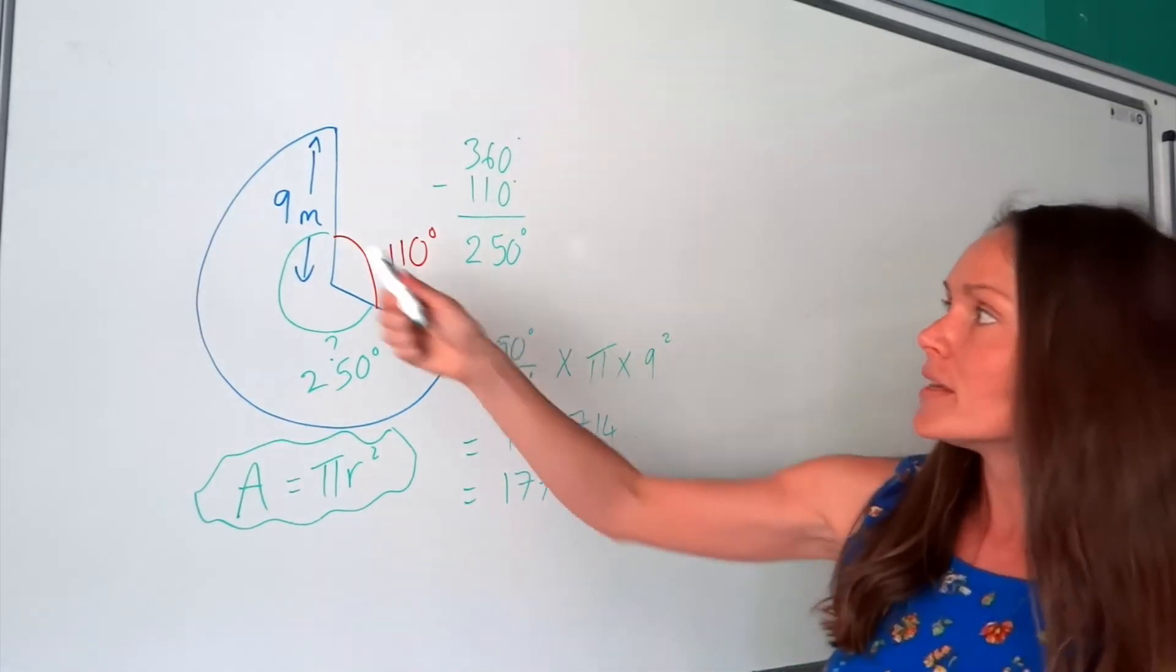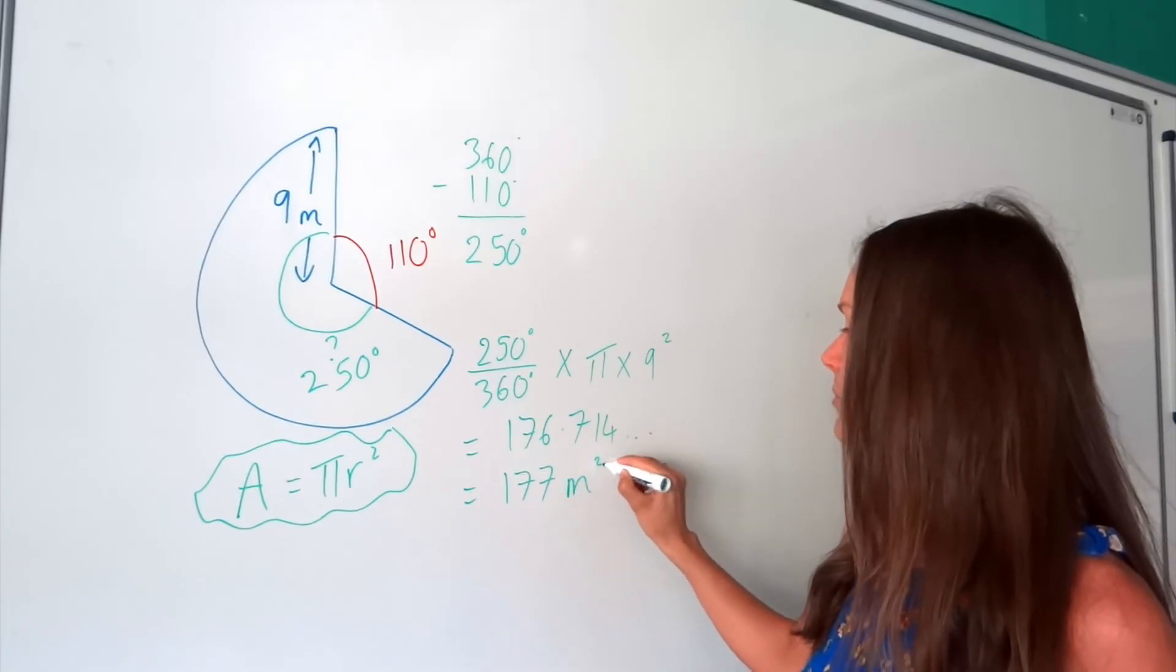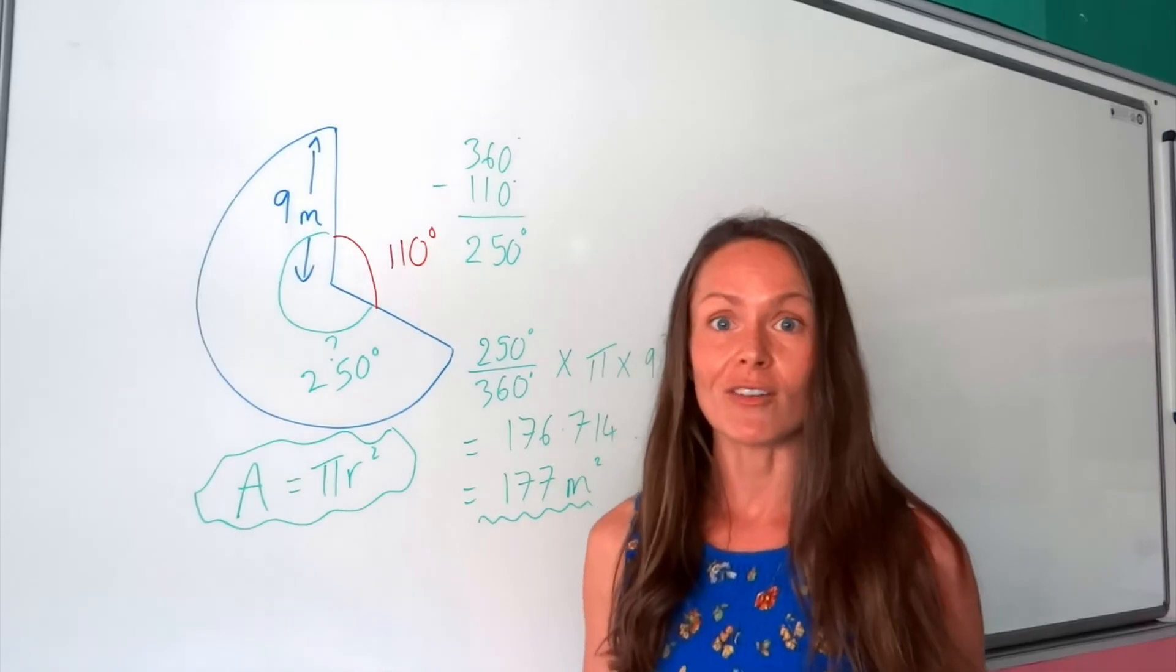Not forgetting the units. This time, the radius was in metres, so our area is in metres squared. So there you go, finding the area of a sector.